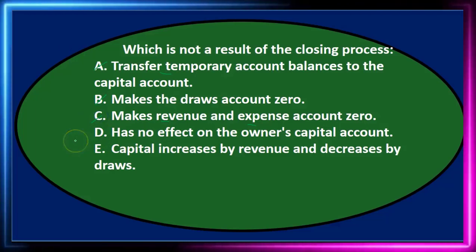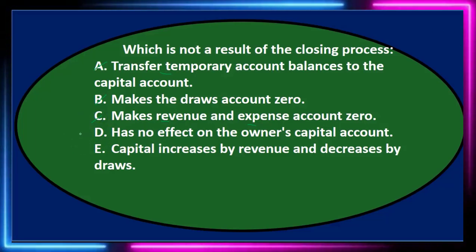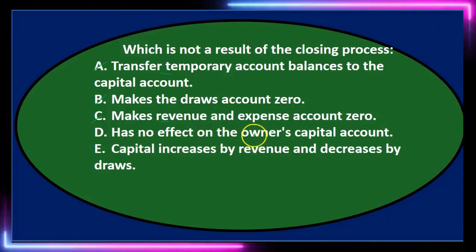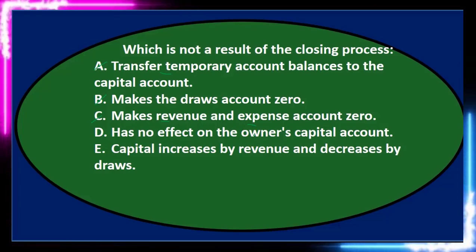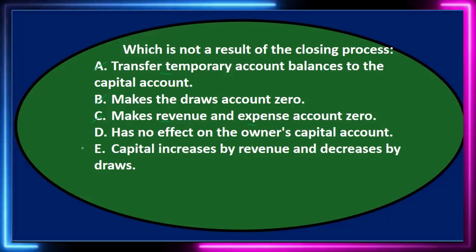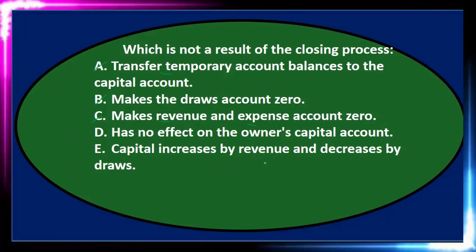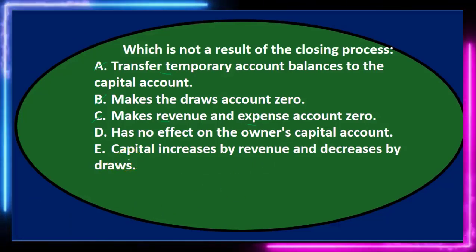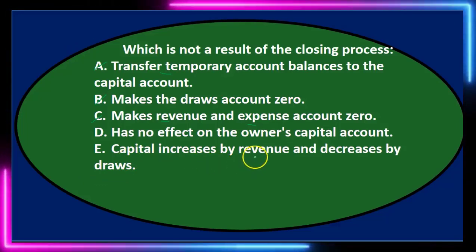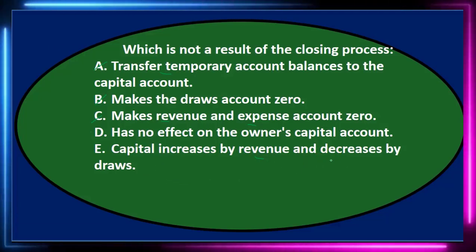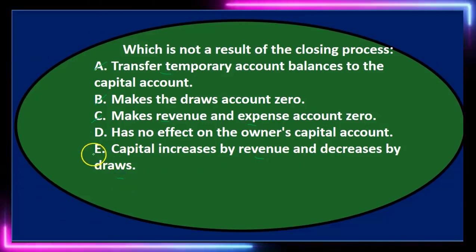D says has no effect on the owner's capital account. Now the owner's capital is a permanent account, a balance sheet account, but it's really what we close out to. So that might be the answer. E says capital increases by revenue and decreases by draws, and that really is what happens in the closing process — we close revenue to capital and close draws to capital. So it's not E.